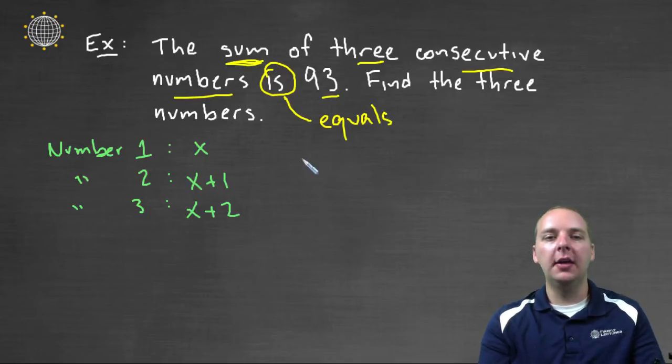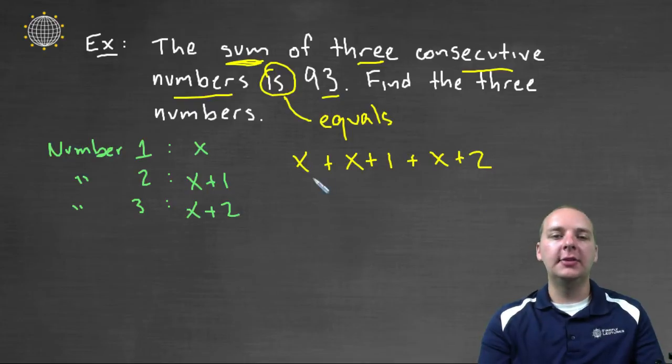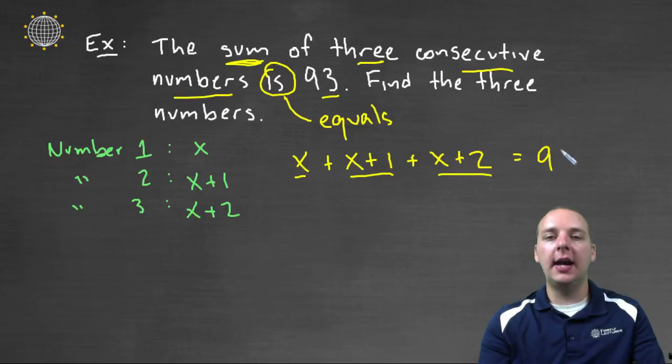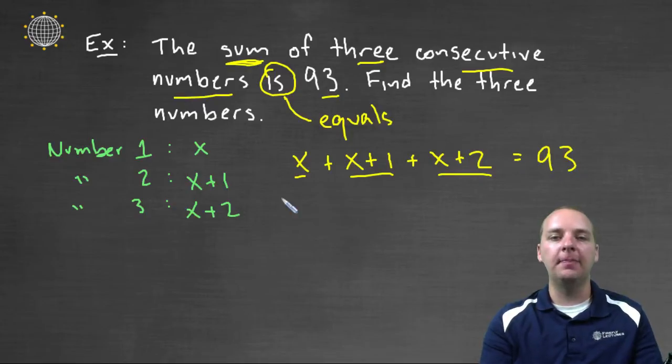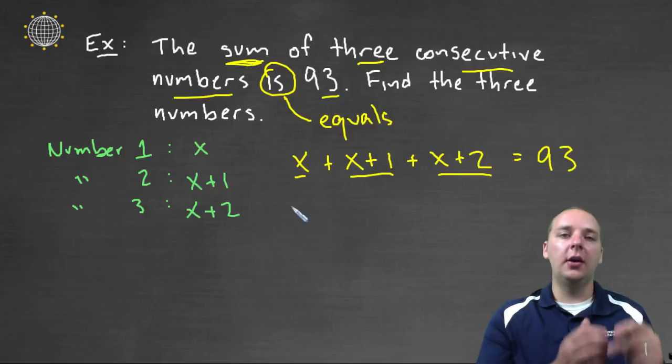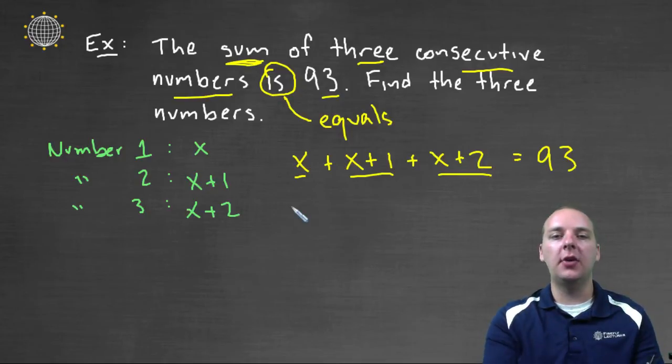So in other words we can take x plus the next number, x plus one, plus the next number, x plus two, and the sum of these one, two, three numbers together should give us ninety-three. I think that's fair to say. But what have we just done? We've taken our word problem and we've expressed it as an equation and we can solve this equation.